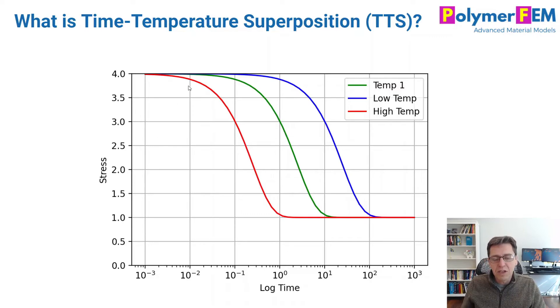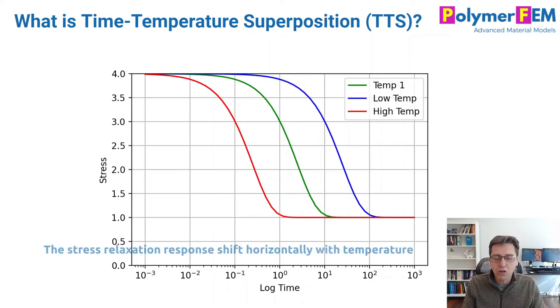And if that's the case, that's really good because if you can measure the curve once and then figure out how much the curves shift, you can then predict the response, the relaxation response at any temperature in that range. And this is the whole idea of time temperature superposition. It's based on the idea that the curves shift in this way at different temperatures.